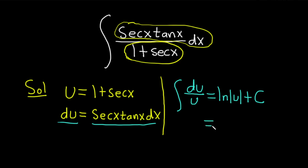This is equal to natural log of the absolute value of 1 plus secant x because that's what u is. So this is 1 plus secant of x, and we have our constant of integration, which is capital C.